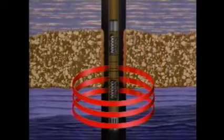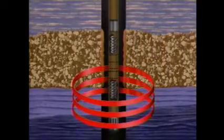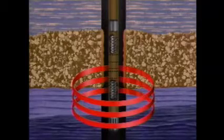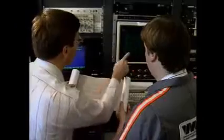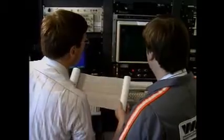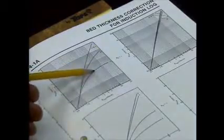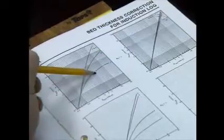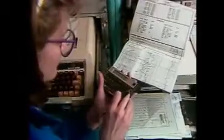Consequently, the returning current signal at the tool will be progressively diminished with increasing formation conductivity. However, compensation for skin effect losses is now automatic. The corrections for bed thickness are carried out with charts. By plotting bed thickness against measured resistivity, an improved resistivity of the center of the bed is determined. Other corrections for induction logging include hole signal and effects of drilling filtrate invasion.